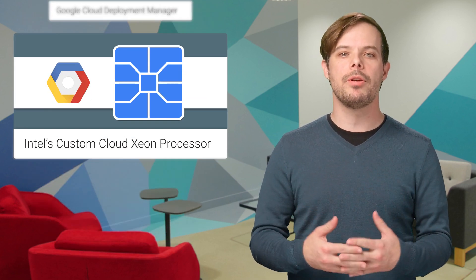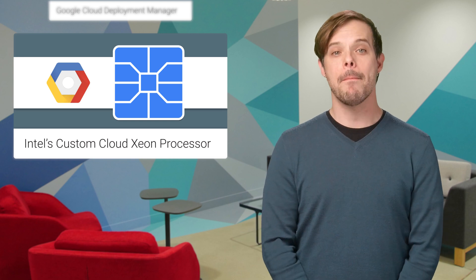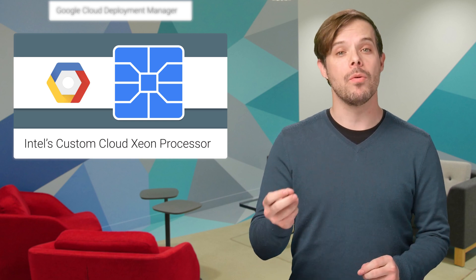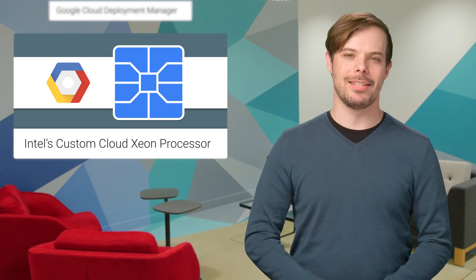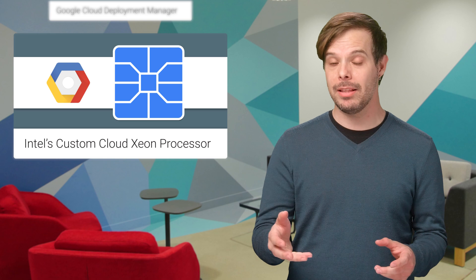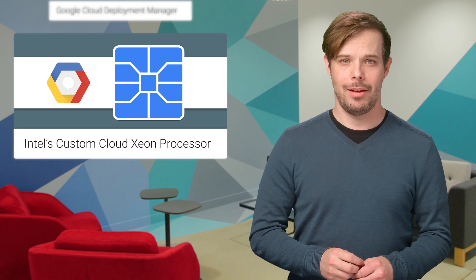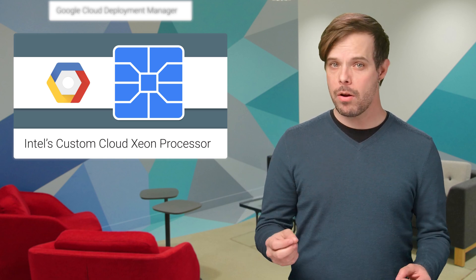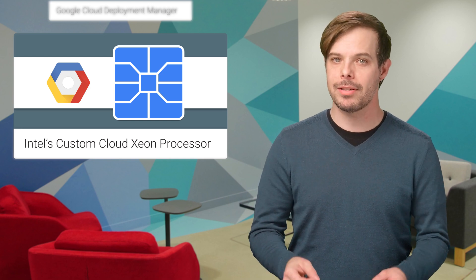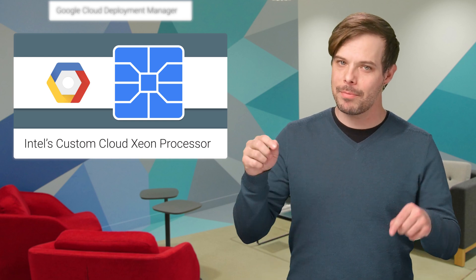We're excited to announce that Google Compute Engine will support Intel's latest custom cloud solution based on the next generation Xeon processor, codenamed Skylake, in early 2017. The upcoming Xeon processor is an excellent choice for graphics rendering, simulations, and any CPU-intensive workload. If you'd like to be notified of upcoming beta testing programs, fill out the form linked on the post in the description below.